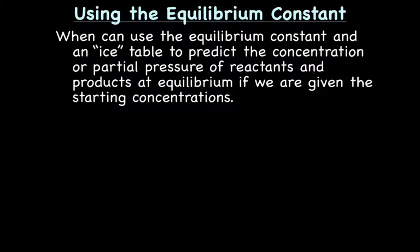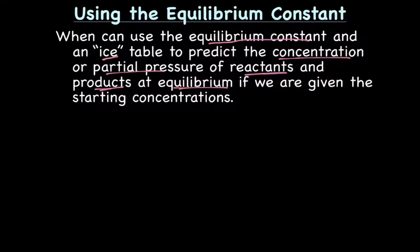What else can we do with the equilibrium constant? We can use the equilibrium constant and an ICE table — which we'll talk about in a minute — to predict the concentration or partial pressures of reactants and products at equilibrium, if we're given the starting concentrations. This sounds a lot like stoichiometry, and it kind of is. Knowing the equilibrium constant and some starting concentrations, we can predict what concentrations of reactants and products will be after the reaction reaches equilibrium.